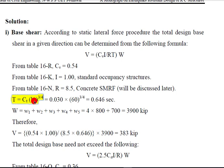And T is the time. So the time formula is T = CT(HN)^(3/4). So HN is the total height of the story, and CT depends on the type of the structure. If it is a steel structure, we take 0.035. For concrete structure, for RCC structure we take 0.030.